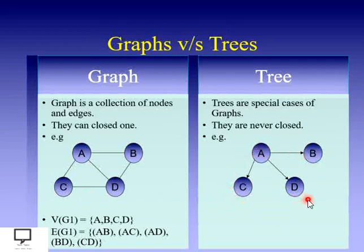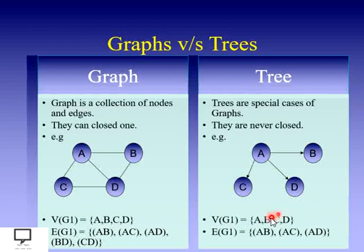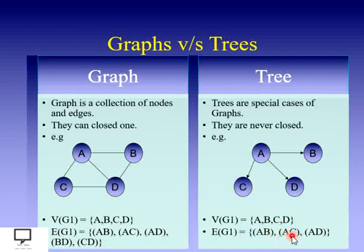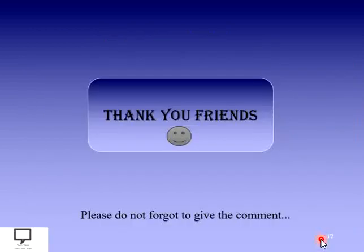If we want to represent a tree as a graph, the set of vertices V is again {A, B, C, D}, but the set of edges contains only three edges: {A,B}, {A,C}, and {A,D}. This shows how a tree has fewer edges and forms an open structure compared to a graph.